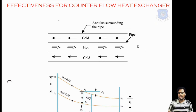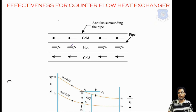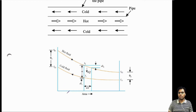We know that in a counter flow heat exchanger, the direction of flow of the fluids are opposite to each other. From the flow arrangement we can see that the hot fluid is flowing from left to right and the cold fluid is flowing from right to left. From this flow diagram, if we draw a temperature versus area diagram, it will look like this.